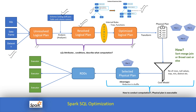Once the optimized logical plan is generated using different rules, it is transformed into multiple physical plans — for example, Plan 1, Plan 2, and Plan 3. The logical plan covers the 'what' part; the physical plan covers the 'how' part. Plan 1 might be a sort-merge join, while Plan 2 or Plan 3 might be a broadcast join. To select the best plan, a cost analysis is performed. The cost model collects statistics: number of rows, null values, maximum and minimum values, distinct counts, and so on.